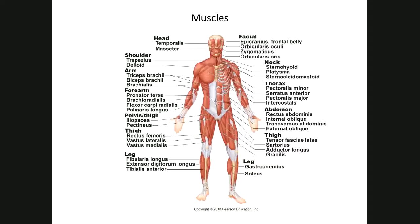Today we're going to be looking at some of our major muscle groups. On the anterior part of the body you can see the head and neck in the front, your thoracic muscles, your pectoralis major and minor, your abdominal muscles, triceps, and these are going to be your quadriceps muscles.